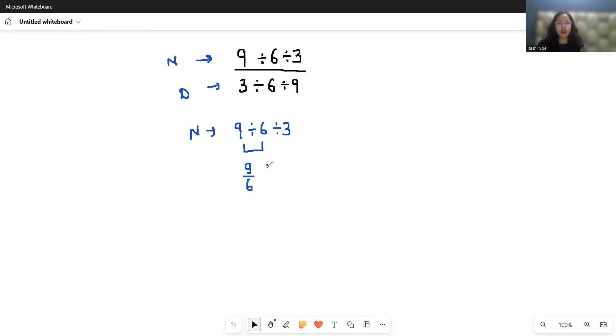So 9 divided by 6 divided by 3. This gives us when we divide it by 3, the simplest form is 3 by 2 divided by 3. So here I'm going to use the KCF rule, which says that you have to keep the left-hand side visit, that is 3 by 2.